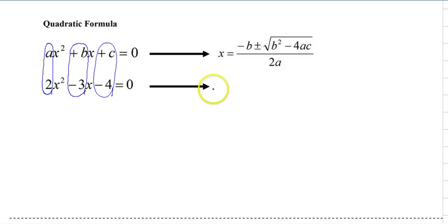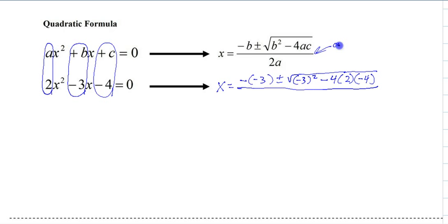Okay, so now all you have to do is plug it in. So it's negative and then the b here is negative 3. Plus or minus square root, same thing. Make sure you put everything in parentheses as you write them. So our a is 2, our c is negative 4, and then it's all over. Very important, all over 2 times 2.